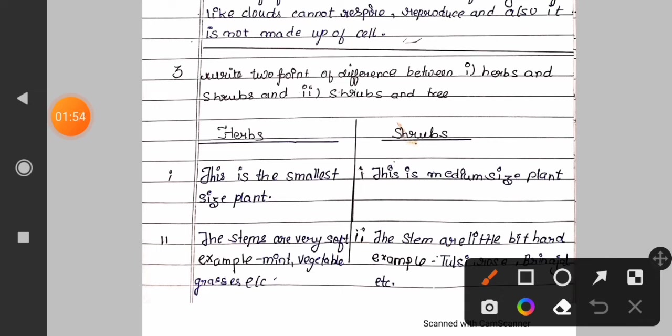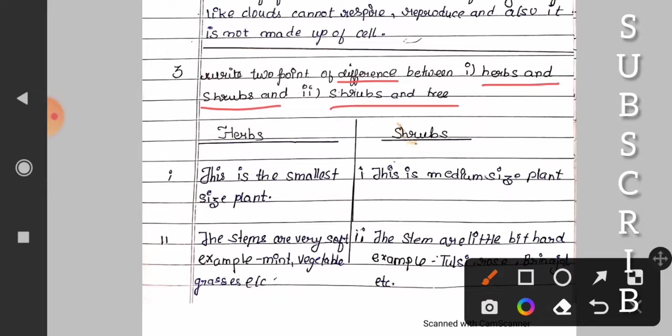Let's move on. Question number three: Write two points on difference between herbs and shrubs, and second point telling shrubs and trees. So, the first difference is: Herbs - it is the smallest size plant. The stems are very soft. Example: mint, vegetables, grasses, etc.